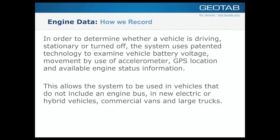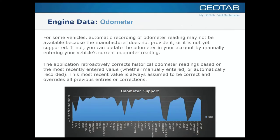This allows the system to be used in vehicles that do not have an engine bus — like two-wire vehicles — as well as new electronic or hybrid vehicles, commercial vans, large trucks, and even ATVs, snowmobiles, and bicycles with batteries. Now, back to the engine information. For some vehicles, we can get odometer straight from the ECM. For 2008 and newer, we'll most likely get odometer, but older vehicles may not provide that from the ECM.